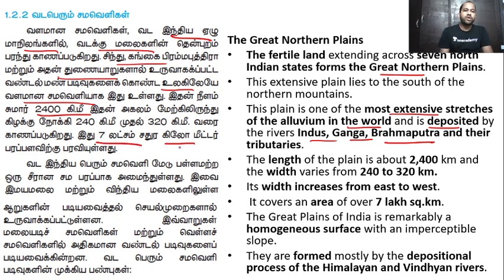The area is 7 lakh square kilometers. This is the Great Northern Plains — it covers a very large square kilometer area.